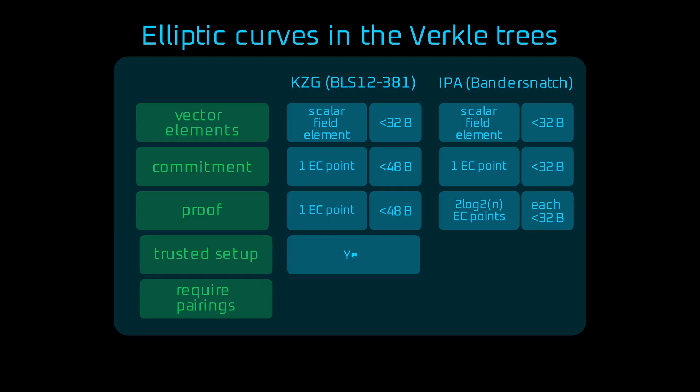And perhaps the most important difference, KZG requires a trusted setup and pairing-based verification, which is computationally expensive. IPA commitments do not.